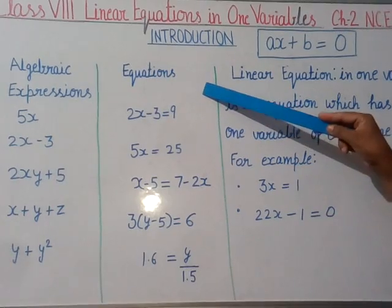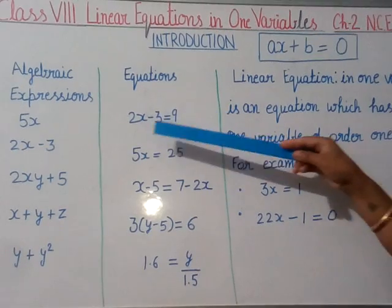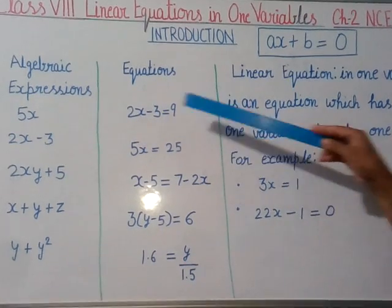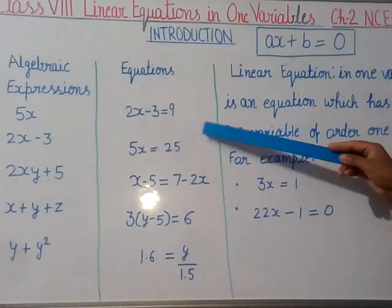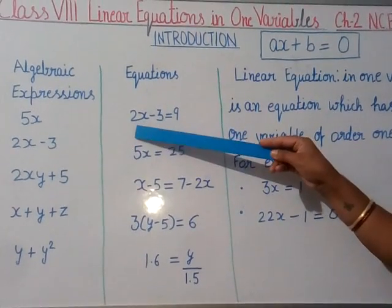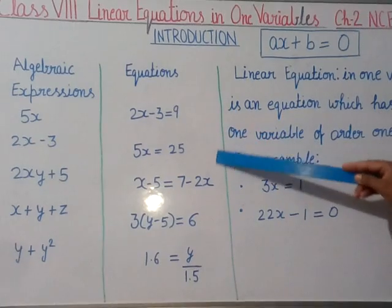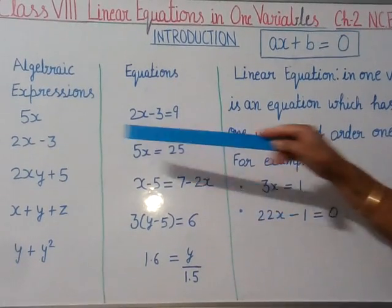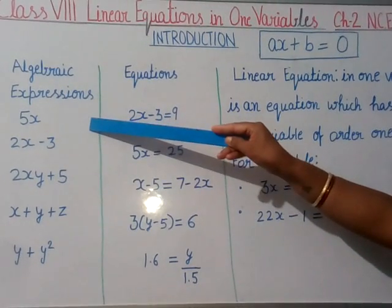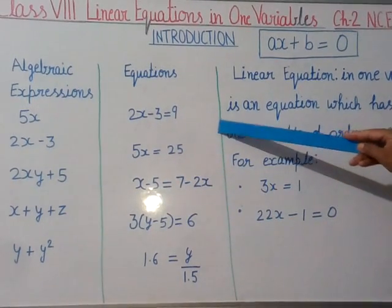Now, what are equations? We have learned in earlier class 7 that an equation is an algebraic expression in which there is a sign of equal between the left hand side and right hand side. These are only algebraic expressions because there is no equal sign. These are some examples of equations.